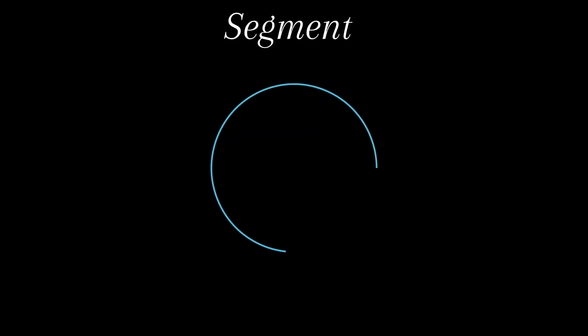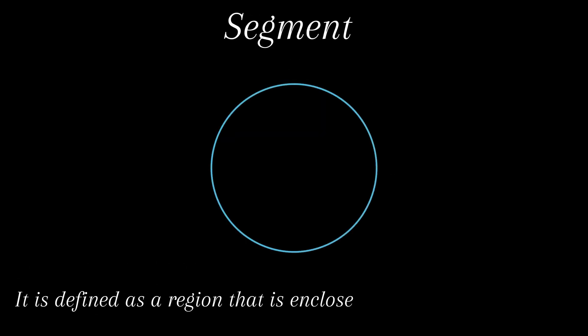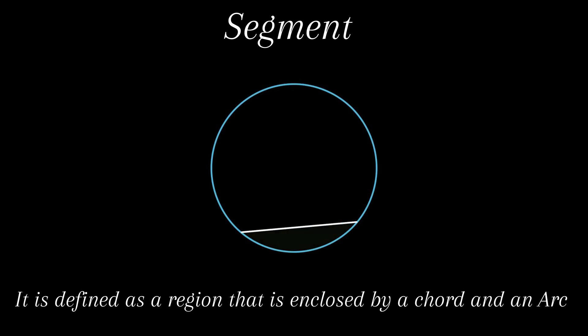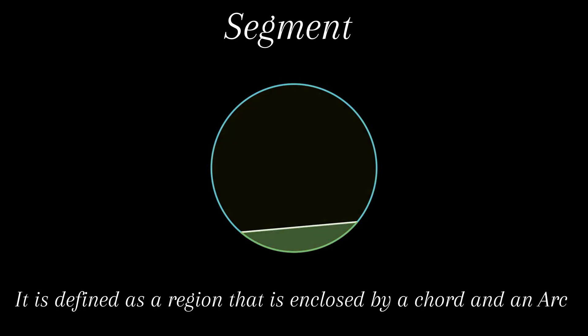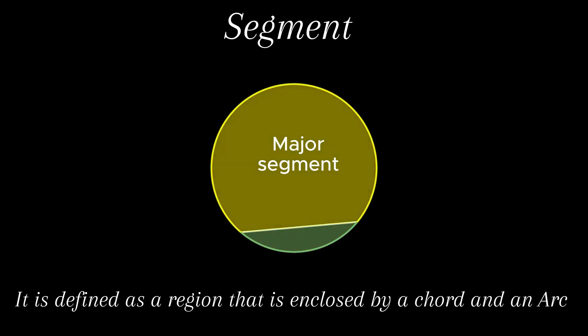Next is the segment of a circle. It is defined as a region enclosed by a chord and an arc. The region that has the larger area is called the major segment, whereas the region with less area is known as the minor segment.